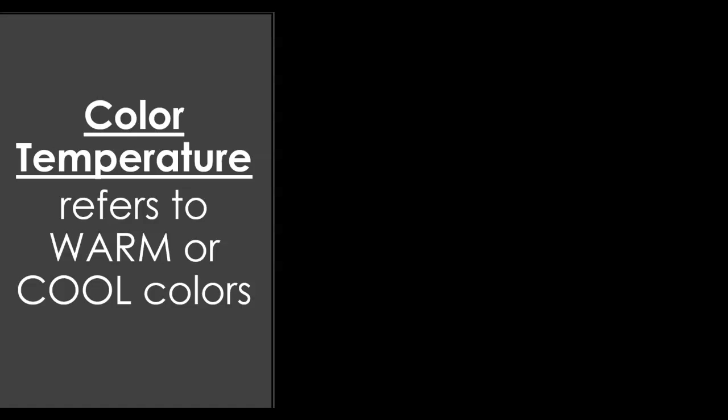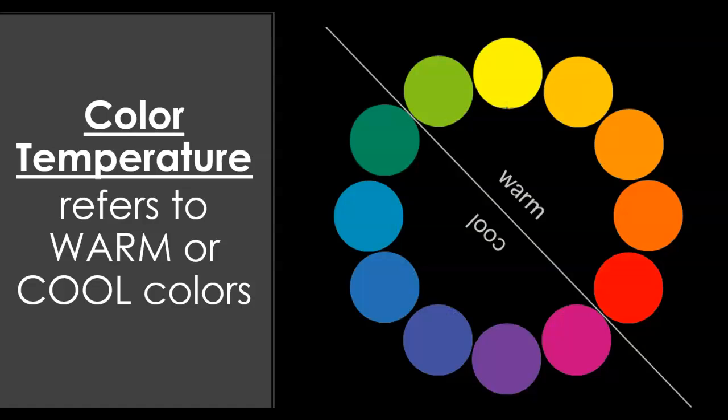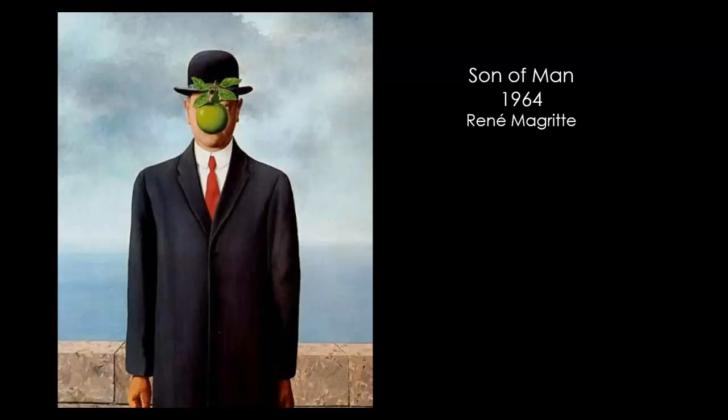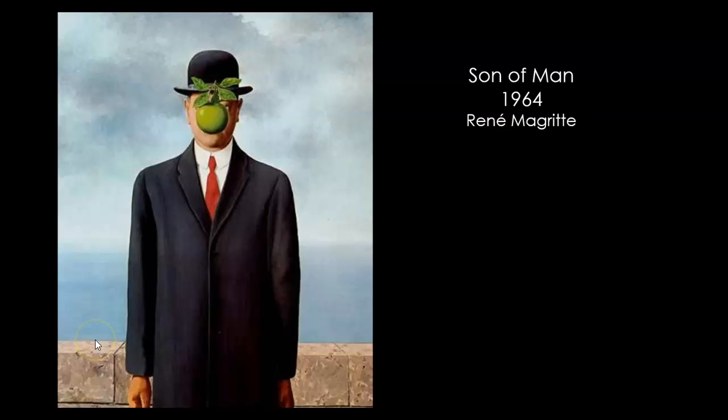Color temperature refers to how warm or cool a color might be. In this composition, Son of Man by René Magritte, it feels like a lot of cool colors create this tone of coldness.